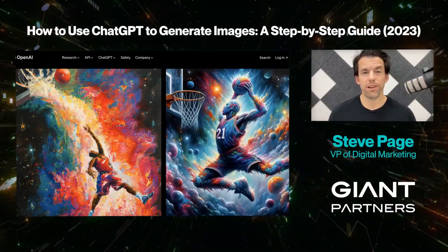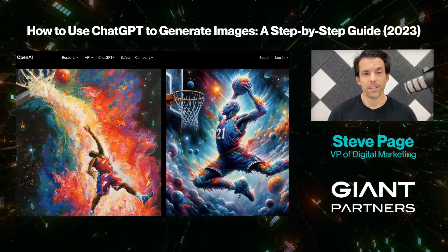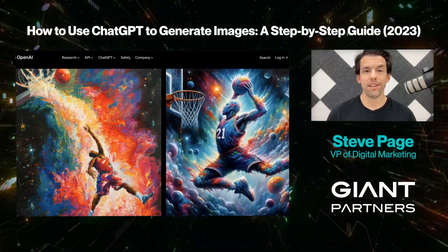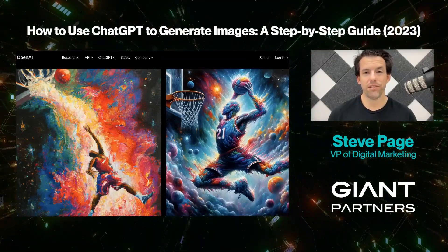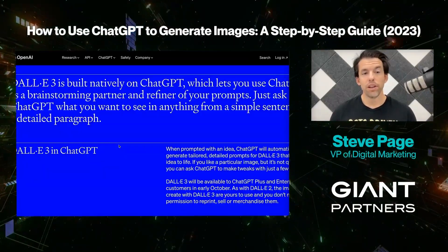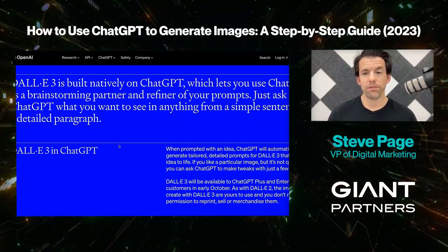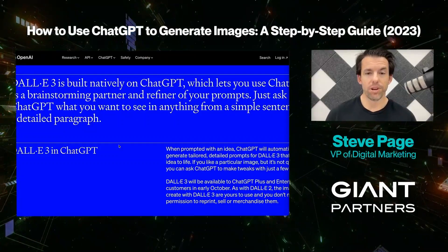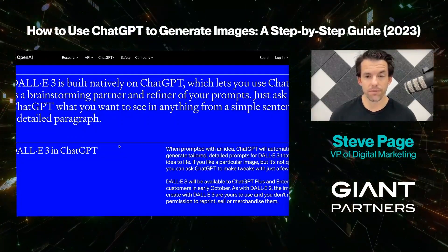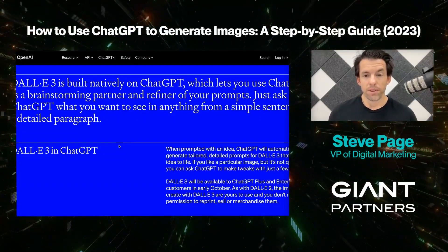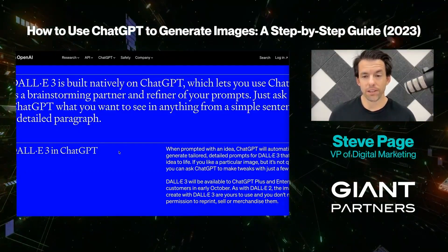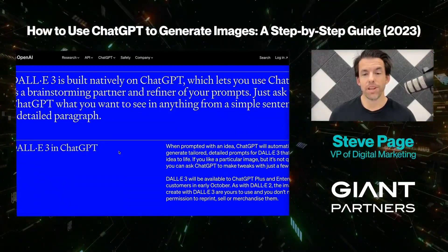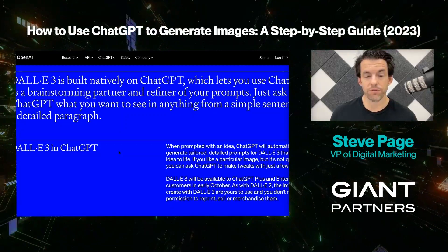This is a huge improvement on image generation from OpenAI. You should be really excited about being able to use ChatGPT and DALL-E together in the chat tool. DALL-E 3 is built natively on ChatGPT, which lets you use ChatGPT as a brainstorming partner and refiner of your prompts. Just ask ChatGPT what you want to see in anything from a simple sentence to a detailed paragraph. When prompted with an idea, ChatGPT will automatically generate tailored, detailed prompts for DALL-E 3 that bring your idea to life. If you like a particular image but it's not quite right, you can ask ChatGPT to make tweaks with just a few words.